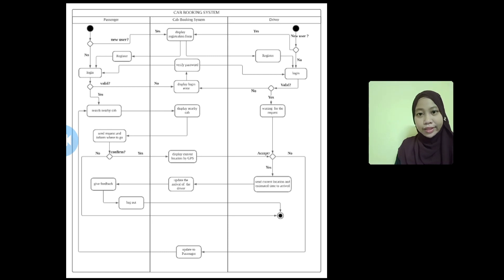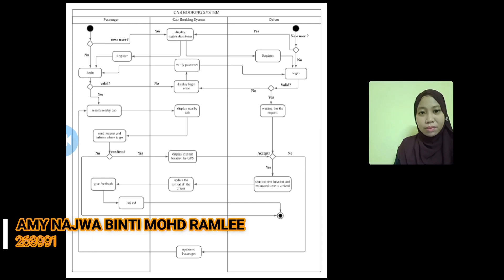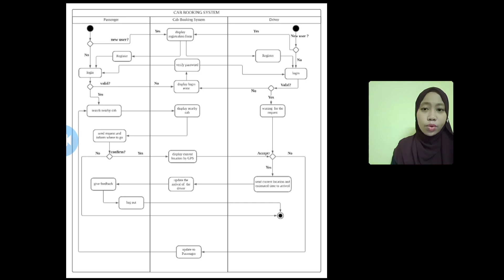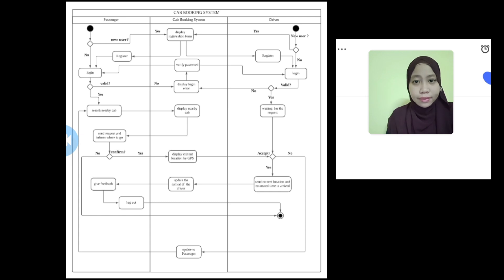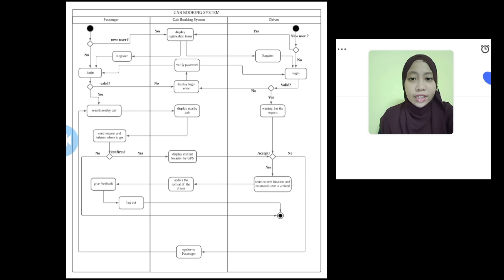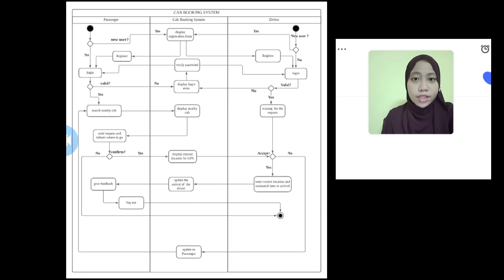Assalamualaikum warahmatullahi wabarakatuh. I am Emy Najwa Binti Muhammad Ramli, and I will continue the presentation on the cab booking system activity diagram. Our system mainly consists of three entities: passenger, cab booking system, and driver. The process begins when both the passenger and the driver must have an account. The system displays a registration form where they key in their name, phone number, email, and password. If they already have an account, they just need to log in.